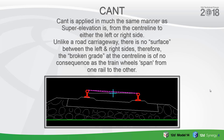The cant is then applied in much the same manner as superelevation is, from the centreline to either the left or the right side. Unlike road carriageways, there is no surface between the left and right rails. Therefore the broken grade at the centreline is of no consequence, and the train wheels span from one rail to the other. Of course, there are transitions — transitioning up from rails being equal height, gently lifting until you've reached your maximum cant, and then at the other end of the curve transitioning back down again.